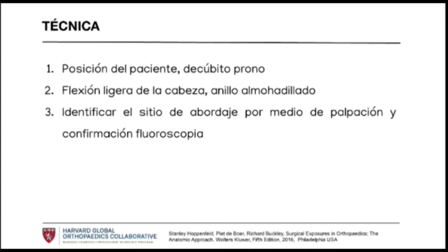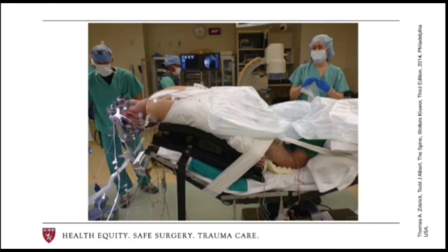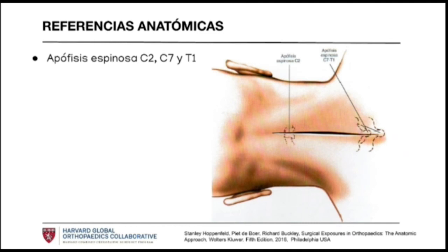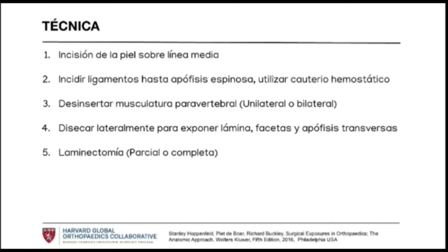In regards to the technique, the patient is placed in a prone position with slight flexion of the head. We identify the size of the incision through the vertebral prominence of the spinous process of C7 with fluoroscopic control in patients with spinal cord trauma or fracture-dislocations. An incision is made in the midline of the skin. The ligaments are incised up to the spinous process posteriorly and gently, because in the cervical spine one has to be very gentle, unlike the lumbar spine. The incision is kept very close to the posterior lamina to the lateral masses.